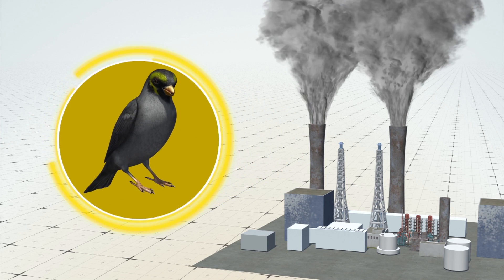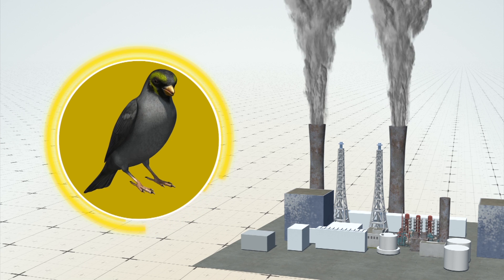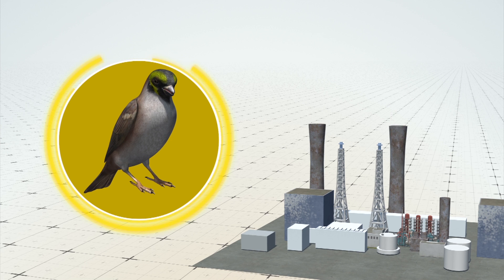They found that older birds were dirtier and new birds were cleaner. The team discovered that soot on birds closely tracks the use of coal over time.